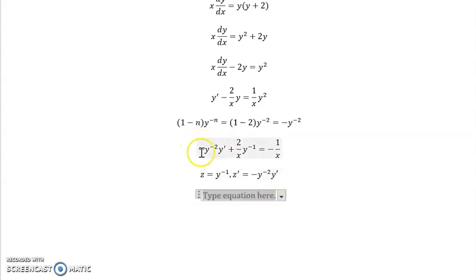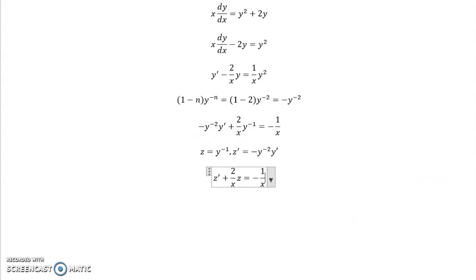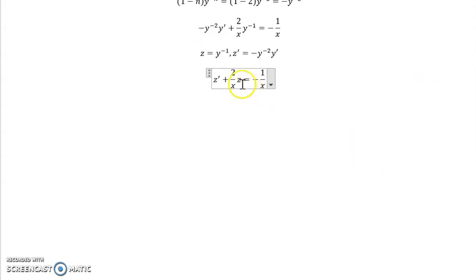But we did it before, and so now we just directly substitute. This whole term becomes z prime, and then the second term becomes the x portion times z, and then the other side of the equation doesn't change at all. But now we can see that this equation is linear in the new variable. It's linear in z.